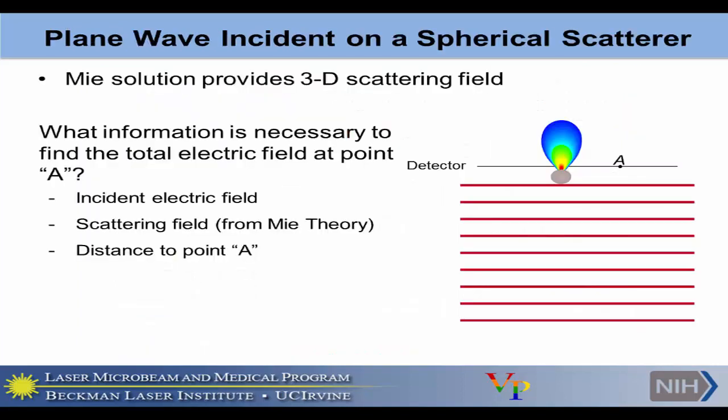The Mie solution provides the three-dimensional scattering field. When we have a spherical scatterer and a plane wave incident, we get a three-dimensional scattered field. To find the electric field at a specific location, we need the incident electric field, the scattering field from Mie theory, and the distance r from the scatterer to the observation point A.